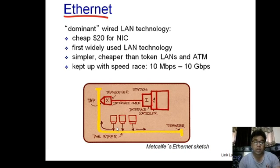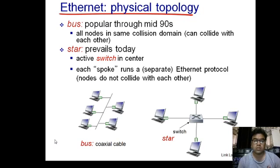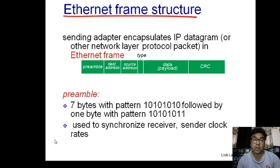Ethernet originally used bus topology in the mid-90s, where all nodes were in the same collision domain and the possibility of collision was very high. That is why these days Ethernet uses star topology, where all nodes have their own separate, fully duplex connection with the switch. This makes it a very promising technology today.